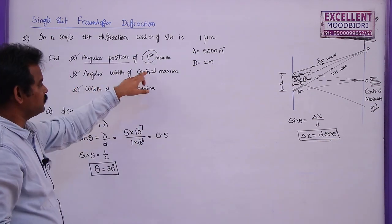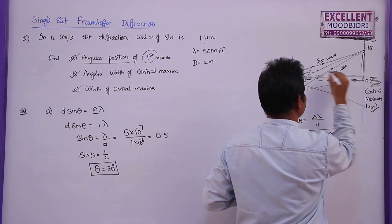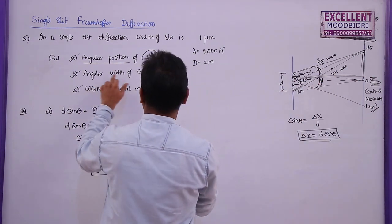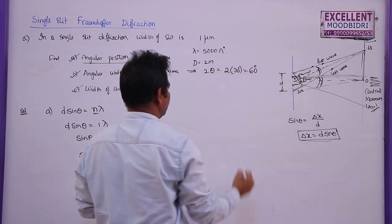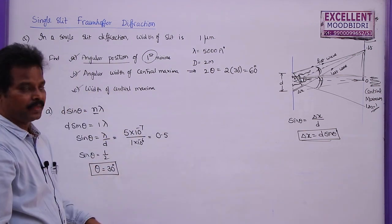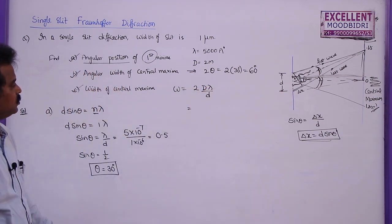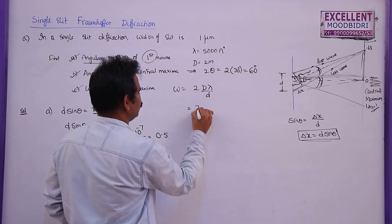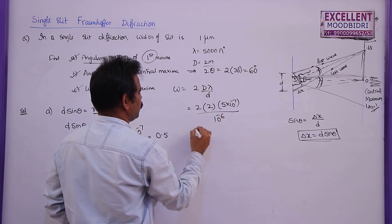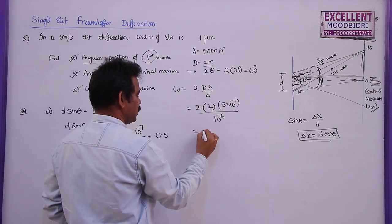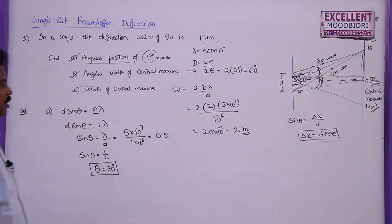The angular width of the central maxima: since first minima is at 30° on each side, the total angular width = 2θ = 2 × 30 = 60 degrees. Width of central maxima using formula 2Dλ / d: = 2 × 2 × (5 × 10⁻⁷) / (10⁻⁶) = 4 × 5 × 10⁻¹ = 20 × 10⁻¹ = 2 meters.